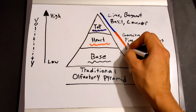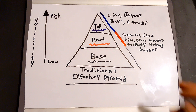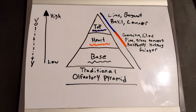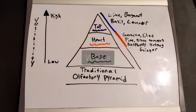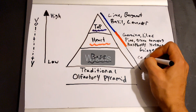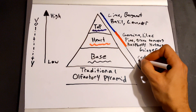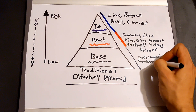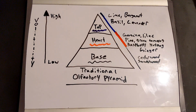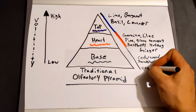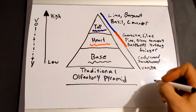Next we have our base notes. Don't let this thin line fool you — this is the foundation of your fragrance. On a molecular level, by nature these are the heaviest ingredients, meaning these are the least volatile compounds and they evaporate very slowly. Here you'll find some of my favorite wood scents like cedarwood and sandalwood. Within your base you might also come across oriental balsam notes like vanilla and tonka bean.